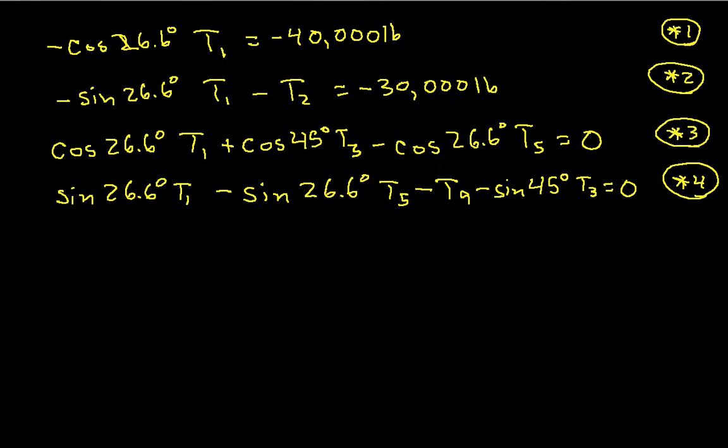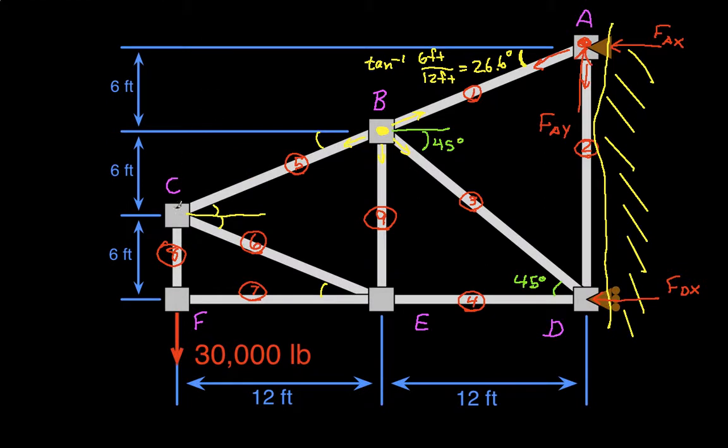So if we go to joint C, we will have T5 in this direction, T6 in this direction, and T8 in this direction.